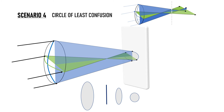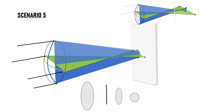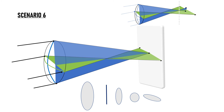Moving the screen a little proximal to the focal point of the vertical meridian, the horizontal beam continues to diverge while the vertical beam continues to converge. The vertical beam is now narrower than the horizontal beam, and we get a horizontally oval image — unlike Scenarios 1 and 3 where we got vertically oval images. At the focal point of the vertical meridian, the vertical beam has finally converged to a single point while the horizontal beam is diverging, so the image is formed only by the horizontal beam and we get a horizontal line.